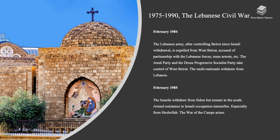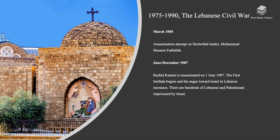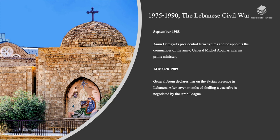In February 1985, the Israelis withdrew from Sidon but remained in the south. Armed resistance to Israeli occupation intensified, especially from Hezbollah. The War of the Camps arose. In March 1985, an assassination attempt was made on Hezbollah leader Mohammed Hussein Fadlallah. Between June and December 1987, Rashid Karami was assassinated on June 1st, 1987. The first intifada began, increasing anger towards Israel in Lebanon, and there were hundreds of Lebanese and Palestinians imprisoned by Israel. In September 1988, Amin Gemayel's presidential term expired. In March 1989, General Aoun declared war on the Syrian presence in Lebanon, and after seven months of shelling, a ceasefire was negotiated by the Arab League.